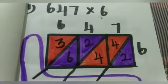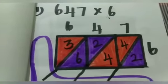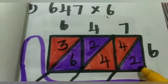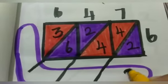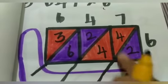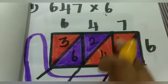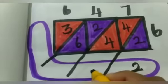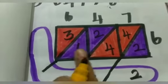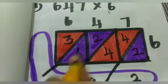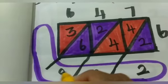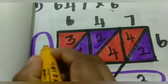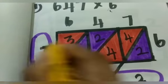Now we add. First, in the 1-strip, we got 2. Next, the 10-strip: 4 plus 4, answer is 8. Next, the 100-strip: 6 plus 2 is 8. Next, the 1000-strip: only 3, so the answer is 3.